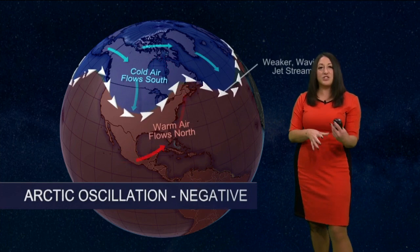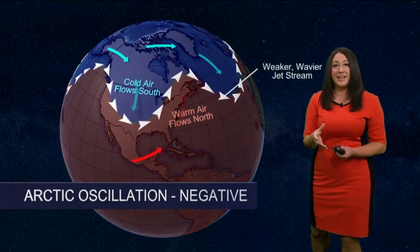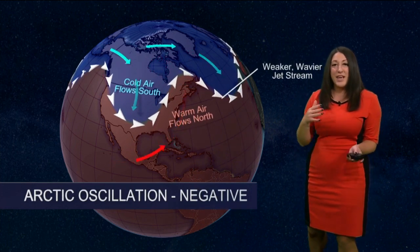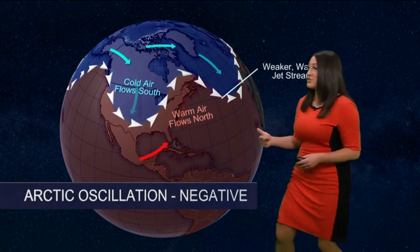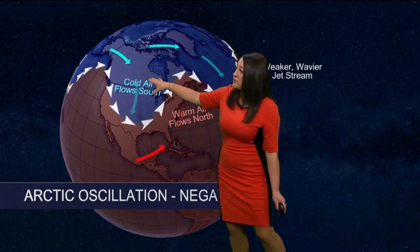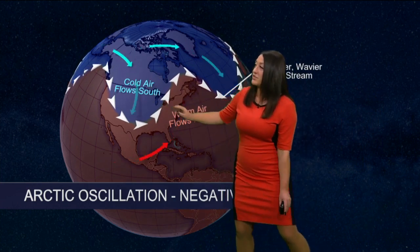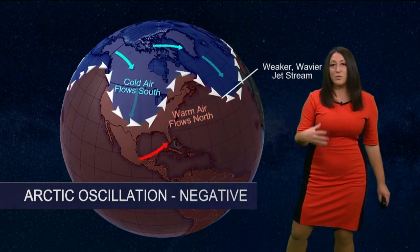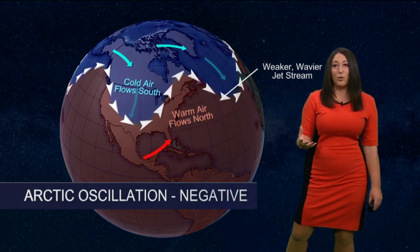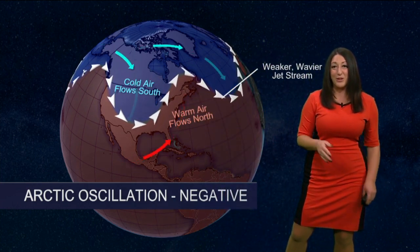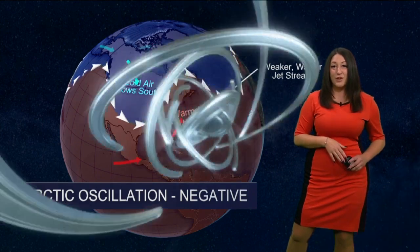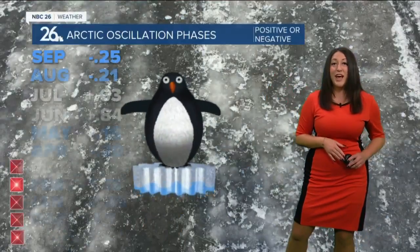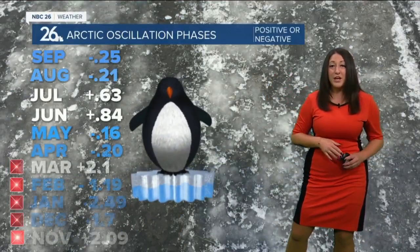But when it actually starts to weaken, it gets wavy, which allows the cold air to start to spill down into our area. That's when we get those Arctic cold snaps in the middle of winter when it's really sunny out and very, very cold. That's what's happening.